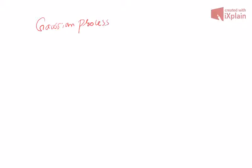Welcome to the next lecture. Today we are going to study an important process called the Gaussian process. This process will be studied in more depth in the discussion of visual communication next semester, but we will define it as much as we need. So what is a Gaussian process? Suppose n(t) is a random process — it will be called a Gaussian process if you take any sample, suppose n(t₁).